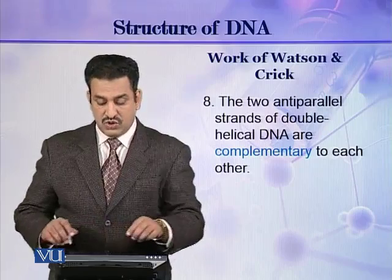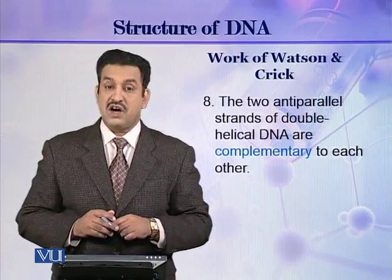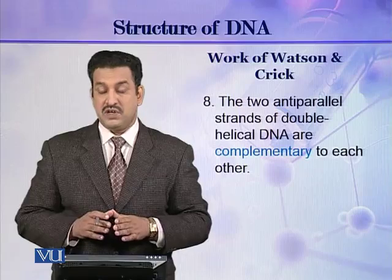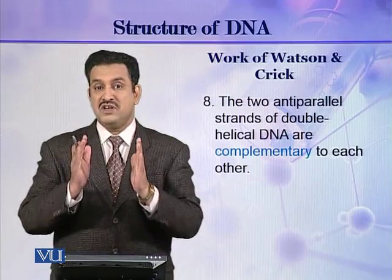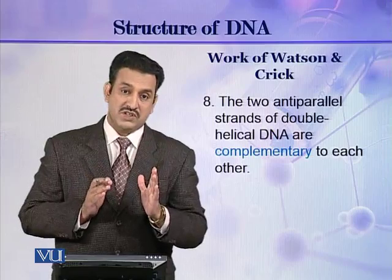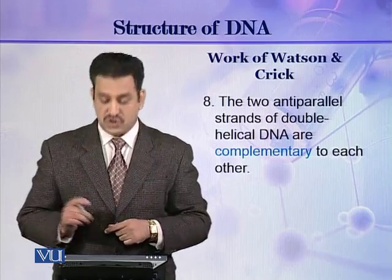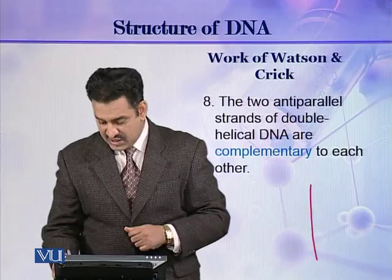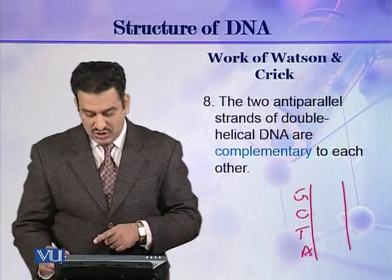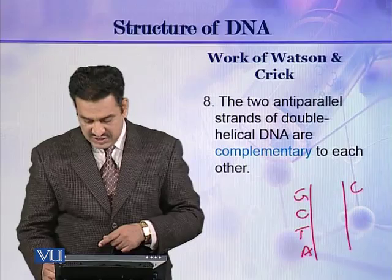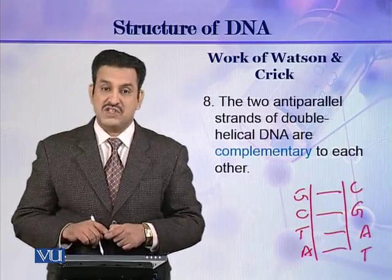Finally, they described that the two anti-parallel strands are complementary to each other. This means if A is present in one strand, T will be present in the other strand, and if G is present in one strand, C will be present in the other strand. For example, a sequence of G, C, T, A on one strand will correspond to C, G, A, T on the other strand. This is called complementary base pairing.